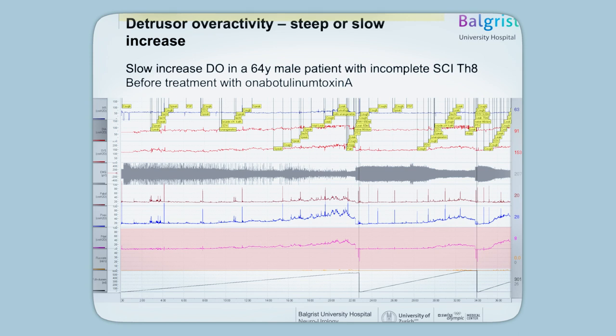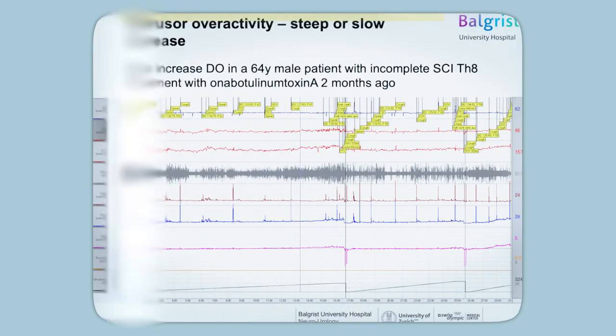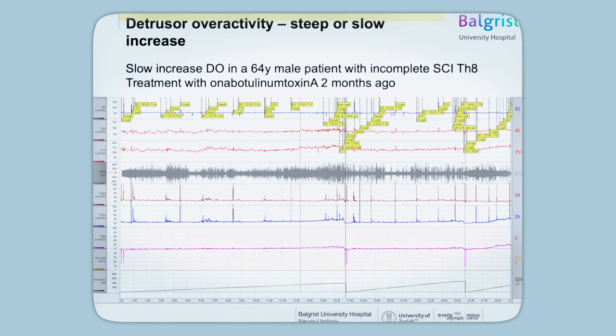It's not a typical detrusor overactivity form. It rather slowly increases from around 250 milliliters onward. After botulinum toxin treatment, it's really become flat. Only in the ice water provocation test do you see remaining detrusor overactivity, which is not of relevance for the patient, so he's quite happy now.